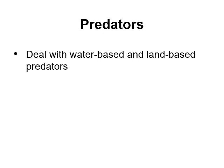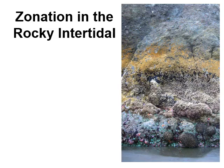Predators are another really important biotic challenge in the rocky intertidal zone. If you live there, you're in the air part of the day and in the water part of the day, so you need to deal with both water-based and land-based predators. Something like a mussel might have to deal with both raccoons and fish eating it. At low tides raccoons go into rocky intertidal zones and eat crabs, mussels, and similar organisms.